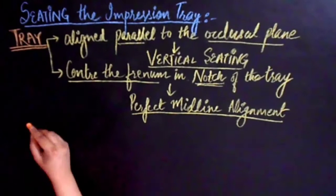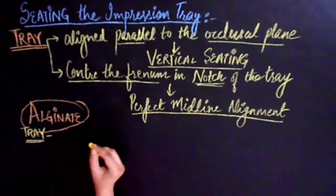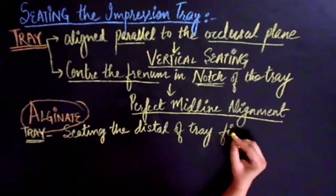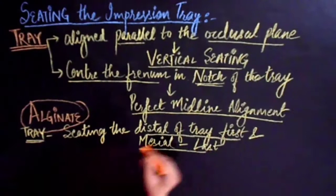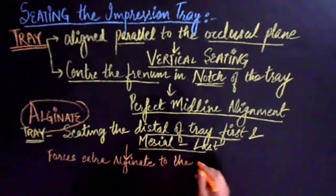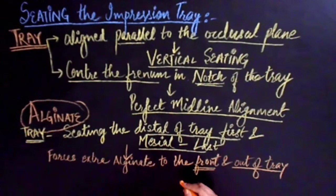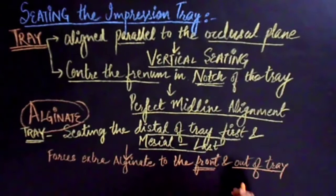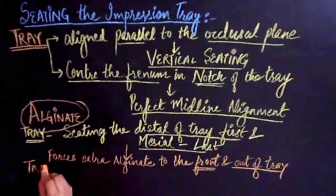In case it's an alginate impression, you need to take care that the placement of the tray in the patient's mouth should be distal first and mesial last. The reason for seating distally first and mesially last is that this would force all the extra alginate to the front and out of the tray rather than down the patient's throat. Still holding the tray in place, look in the patient's mouth and ensure that no alginate is running down into patient's throat area.